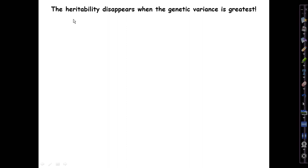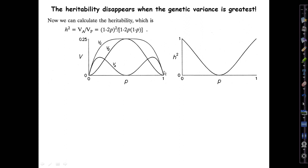The amazing result is we get a response, but the heritability disappears at the point where the genetic variance is greatest—a conundrum we're about to explain. We can calculate the heritability, which is as always the additive genetic variance over the total phenotypic variance. In the handouts I show step by step that it's 1 minus 2p squared over 1 minus 2pq.